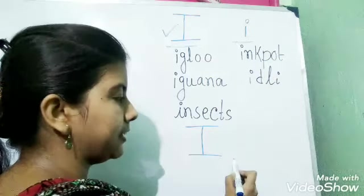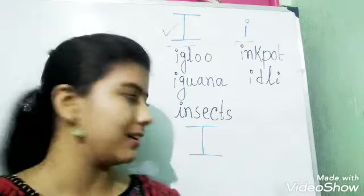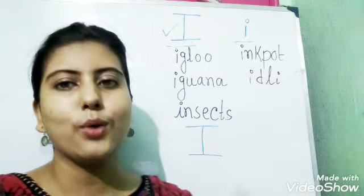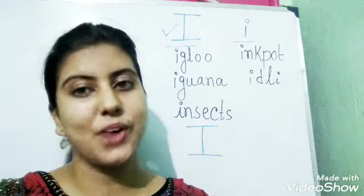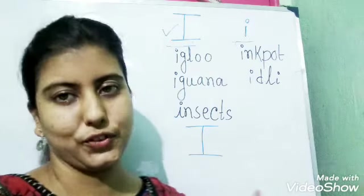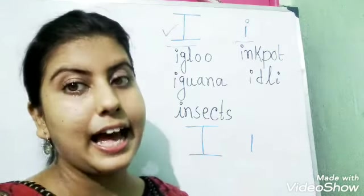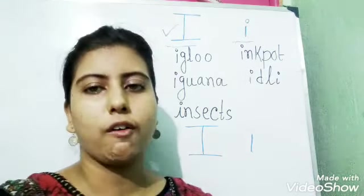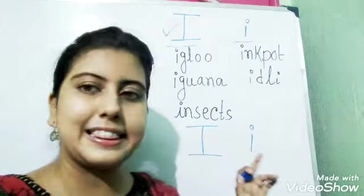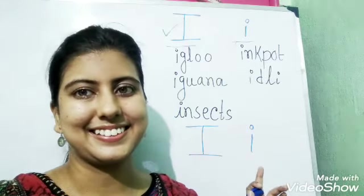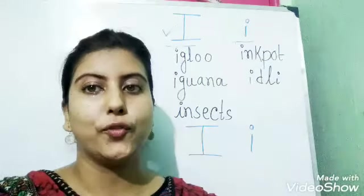Two horizontal lines and then one straight line joining these two lines. Now we will write small i. That is very easy to write. Look carefully. First we have to draw a straight vertical line, and then we will draw a small circle on the top of it, like this. And that will make small i. Now we will learn some words with I.